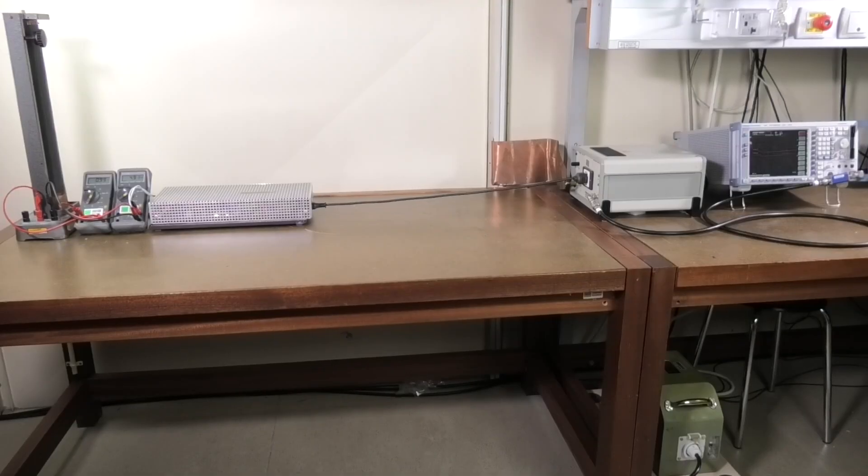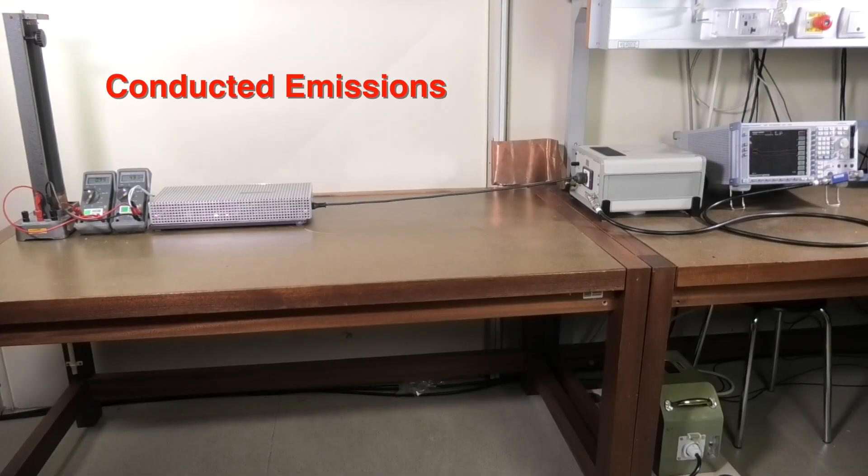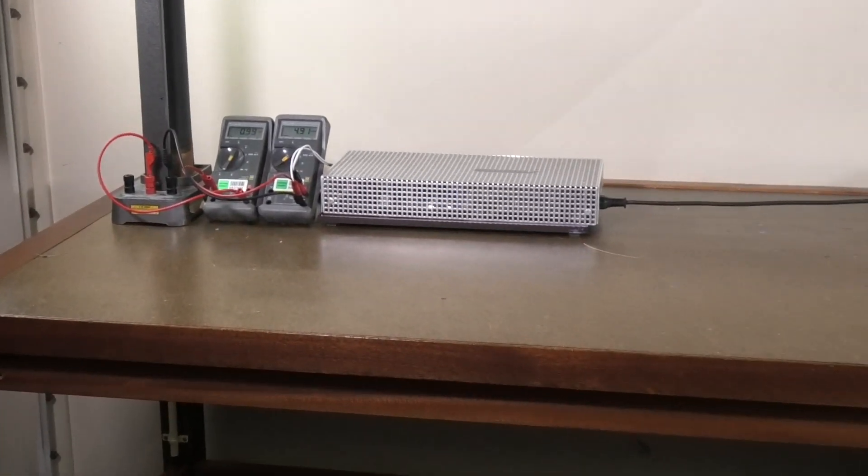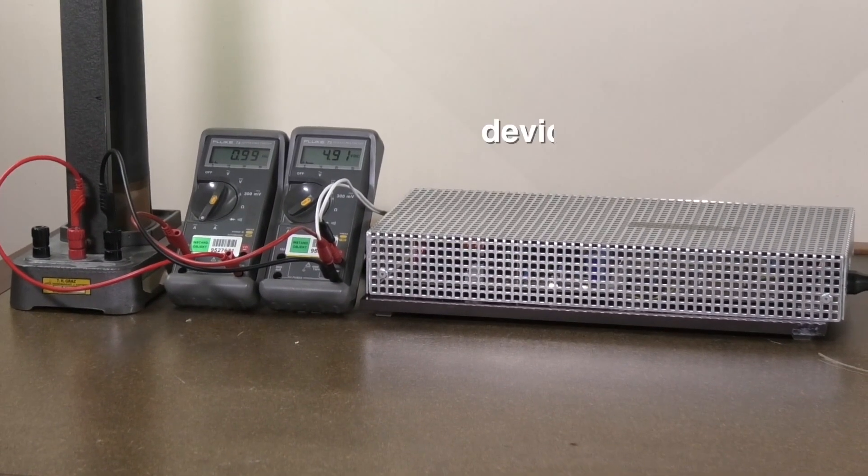You can see here a measurement setup for measuring conducted emissions. Our test object is located on the left of the table. This test object is usually called device under test, or DUT.